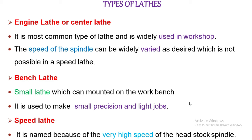Next, bench lathe. Bench lathe is a small lathe which can be mounted on a work bench, that is why it is called bench lathe. It is used to make small precision and light jobs. It has practically all the parts of an engine lathe or speed lathe and performs almost all operations. The main difference is size — it is small. Maximum capacity is 10 inches at the face plate.